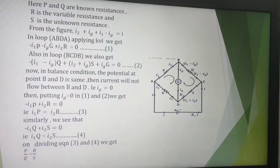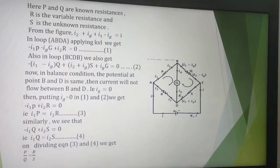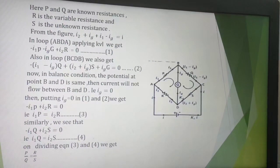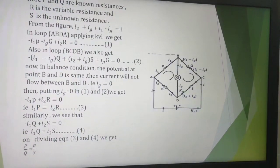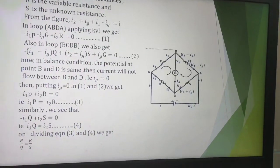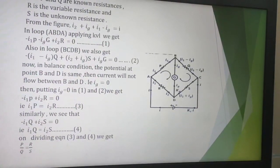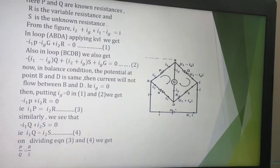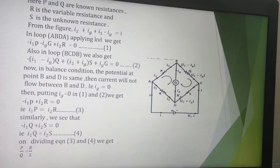Now similarly we see that putting IG = 0 in equation 2, we get -I1Q + I2S = 0, that is I1Q = I2S, equation 4. Now on dividing equation 3 and 4, we get P/Q = R/S, which is the formula of Wheatstone bridge.